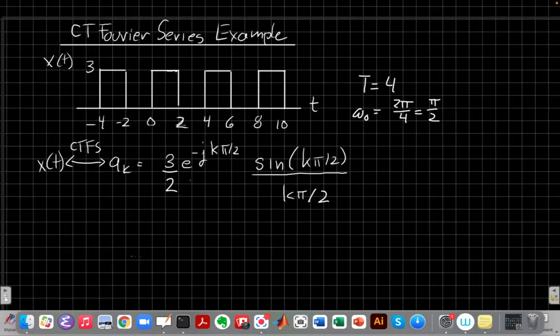In this video we're going to do an example of using Continuous Time Fourier series properties to find the Fourier series for a new signal in terms of an old one we already know.